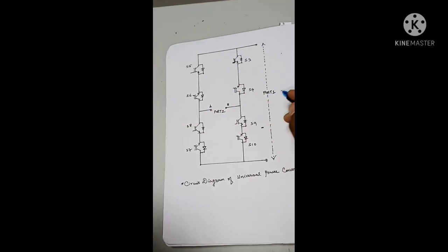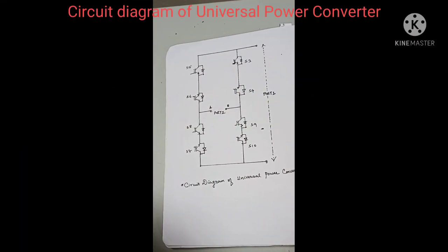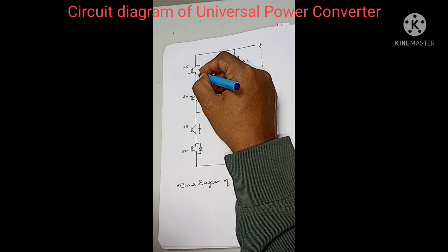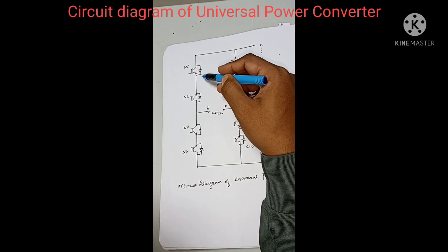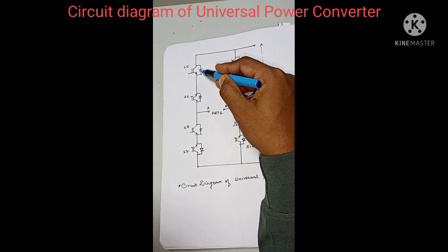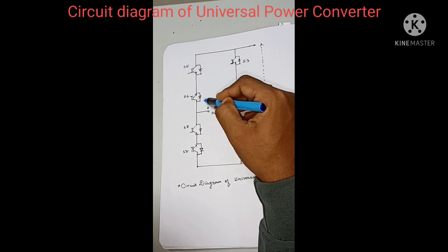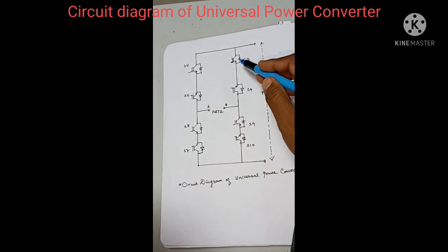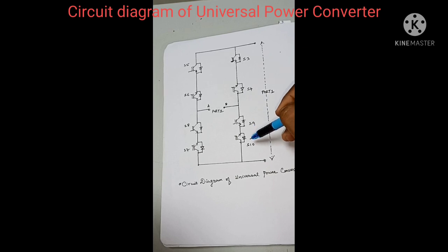Let us first understand the circuit diagram of the universal power converter. We have used IGBTs — insulated gate bipolar transistors — each with a body diode. IGBTs are used in anti-parallel in each leg. In each leg there are four IGBTs, giving us port one and port two.